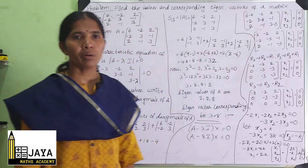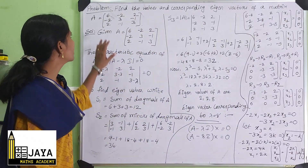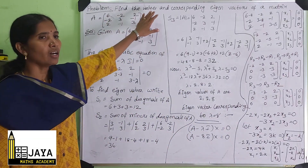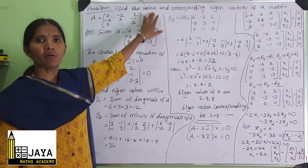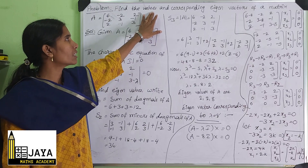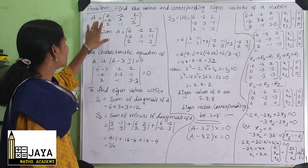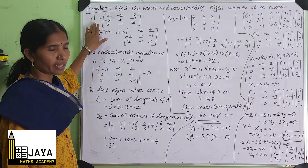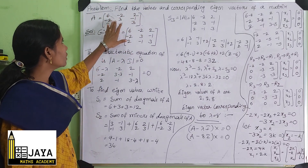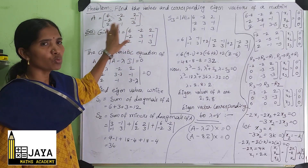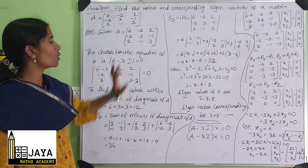Hello viewers. Today our problem is: find the eigenvalues and corresponding eigenvectors of the matrix A = [[6, -2, 2], [-2, 3, -1], [2, -1, 3]].